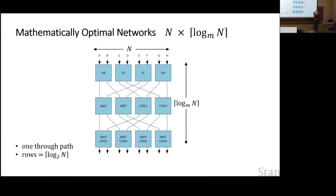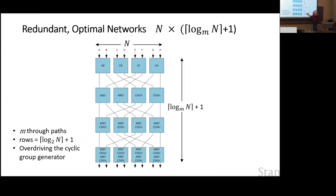What troubled me was that dozens of papers never showed *why* log N is optimal. During COVID I finally proved it. I call it 'gene pool analysis': you have inputs A through H. Each node passes two genes; by the log N level you have one of every possible input, showing you can connect any input to any output. When you add an extra layer, you double the genes — meaning two disjoint paths through the network. With fan-out of four, you get four copies of the input genes. A mathematician would say you're over-driving your cyclic group generator.